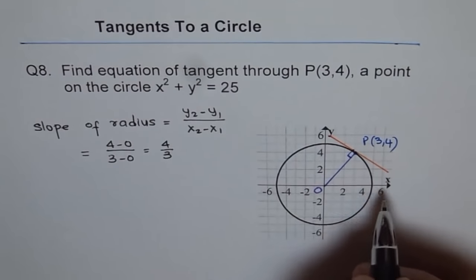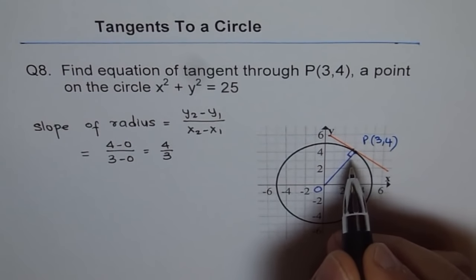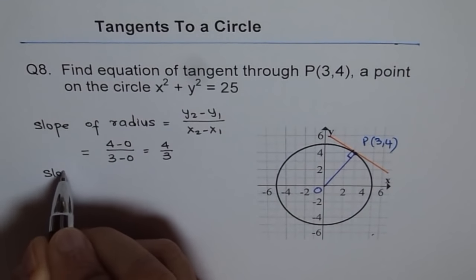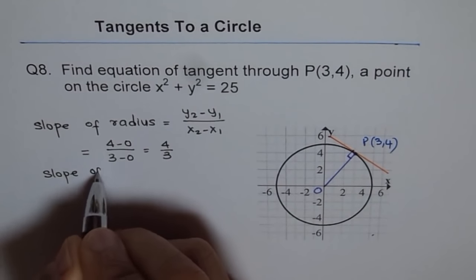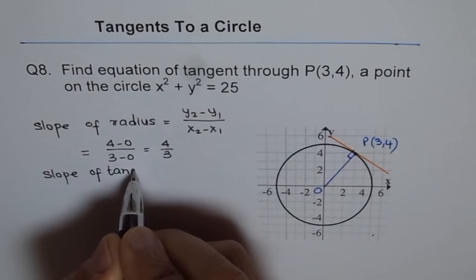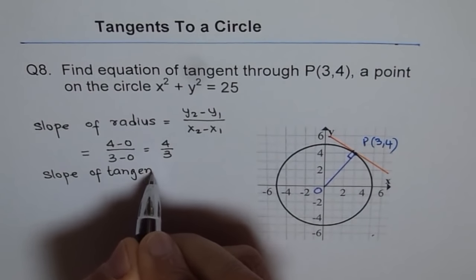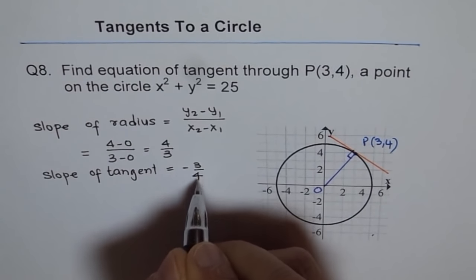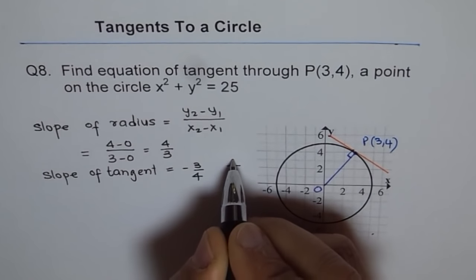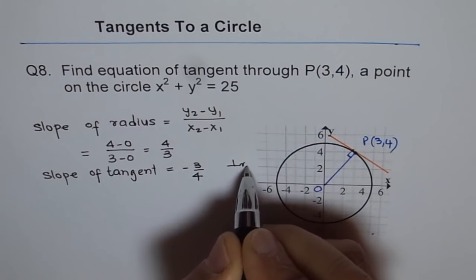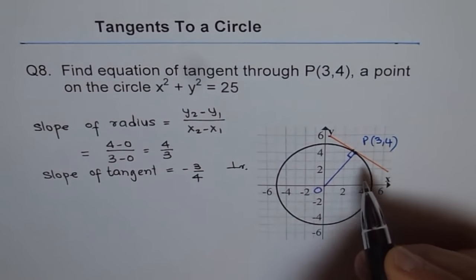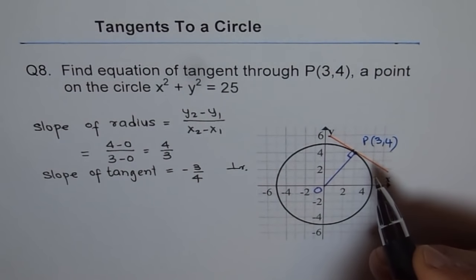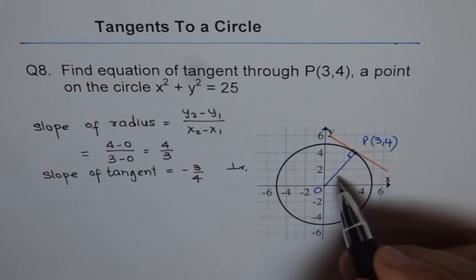Now the slope of the tangent must be perpendicular to the radius, so we take the negative reciprocal. The slope of the tangent is -3/4. Every tangent to a circle is perpendicular to the radius at the point of tangency — that is the property we have used here.